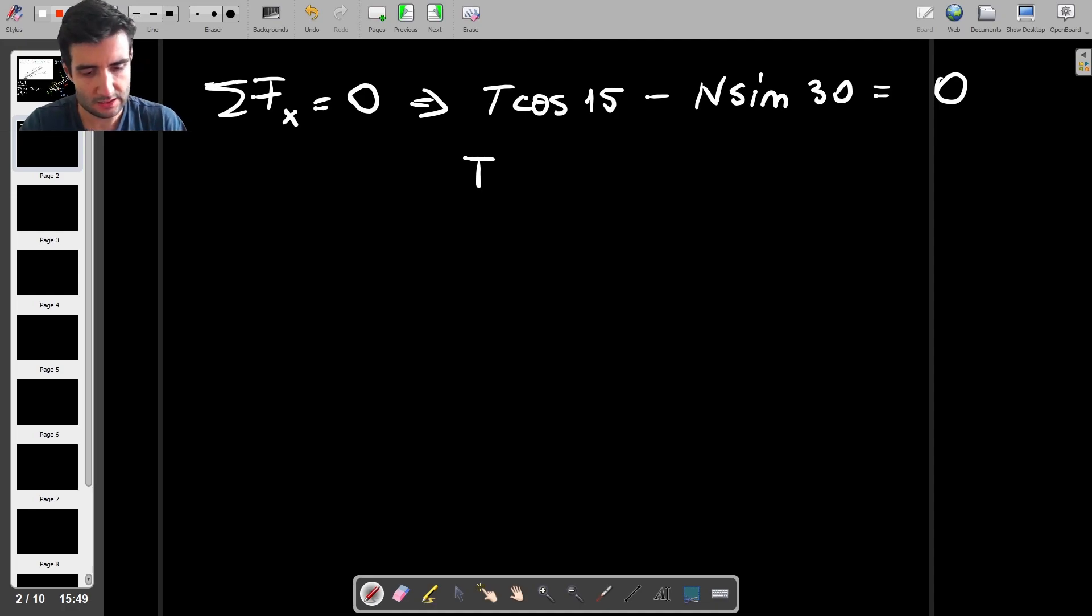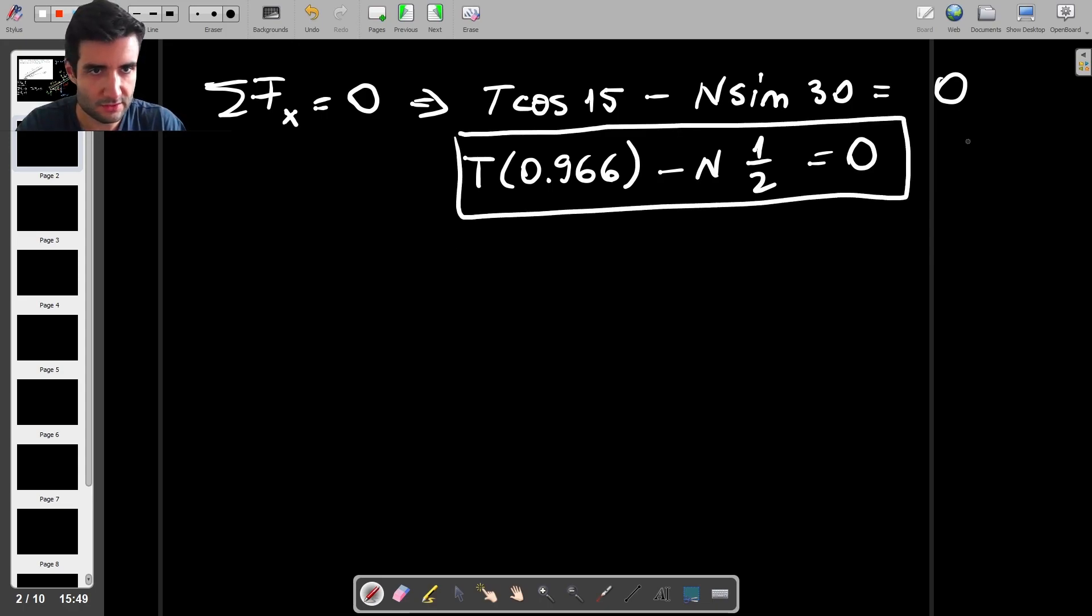So we have T cos 15, we have N sine of 30, and this is equal to zero. I would write down the values of cosine of 15 and sine of 30. So cosine of 15 is going to be roughly 0.966 minus N times one half, and I'll just leave it like this for now. So this is my first equation.